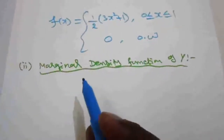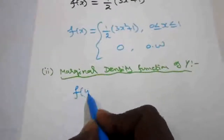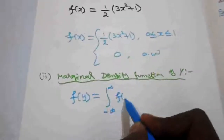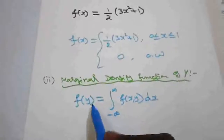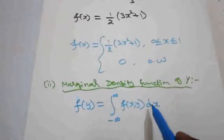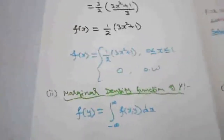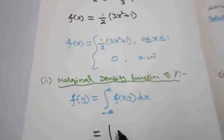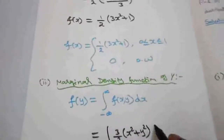Next, I am going to find the marginal density function of y. The marginal density function of y is f(y) = integral from minus infinity to plus infinity of f(x, y) dx. To find f(y), integrate f(x, y) with respect to x and apply the limit for x — x will be eliminated and we get the function in terms of y. So: integral of (3/2)(x² + y²) dx.